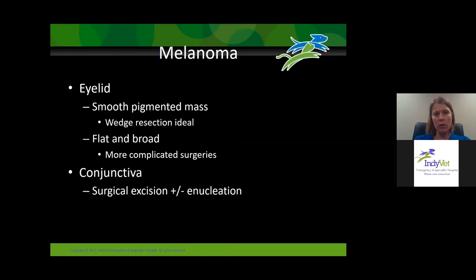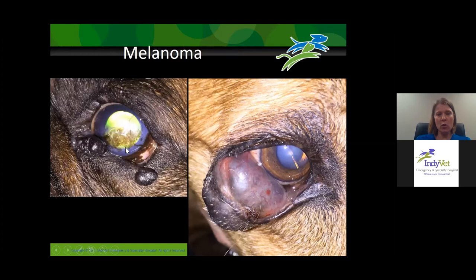Some masses might not be amenable to routine surgeries. We can also see melanomas of the conjunctiva — if it's small enough you can surgically excise it; if large, we may need enucleation or a grafting procedure to try to save the eye. Here's an example: a solitary, dark, smooth pigmented mass — this dog actually had a couple. There was also a dog with a very large melanoma where they couldn't determine if it was eyelid or conjunctival in origin, so we enucleated the eye and removed the mass. The dog has done very well since.